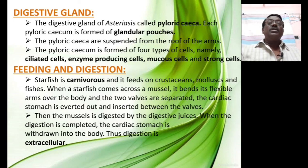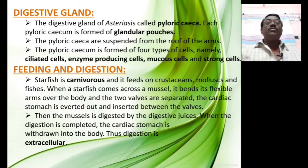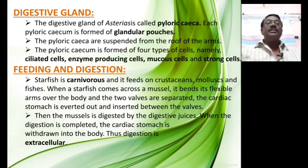Asterias also have digestive glands, commonly called pyloric caeca. Each pyloric caecum is a globular or lobe-like structure formed of glandular pouches, usually suspended from the roof of the arms. The pyloric caecum of the starfish is formed of four types of cells: ciliated cells, enzyme-producing cells, mucus cells, and storage cells.